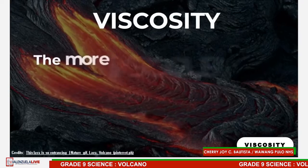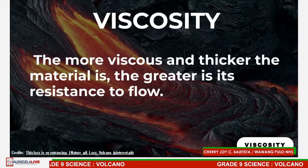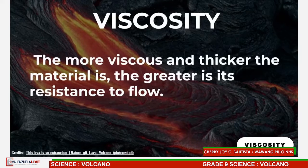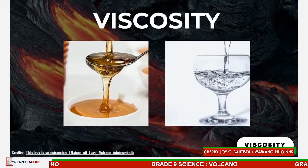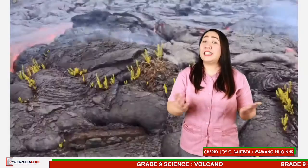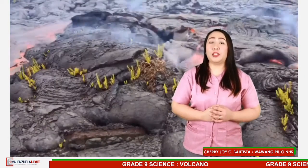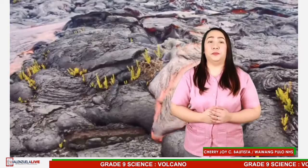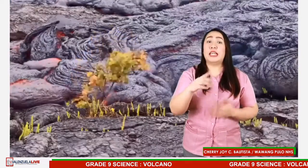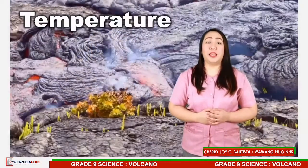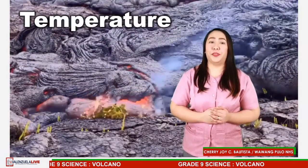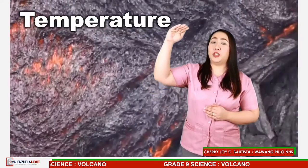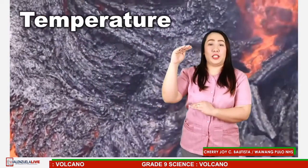Viscosity is the property of a material's resistance to flow. It is also described as a liquid's thickness and stickiness. The more viscous and thicker the material is, the greater is its resistance to flow. For instance, syrup is more viscous than water. Now let's discuss how each factor affects the viscosity of magma. First, temperature. The viscosity of magma decreases with temperature — the higher the temperature of magma, the lower is its viscosity.